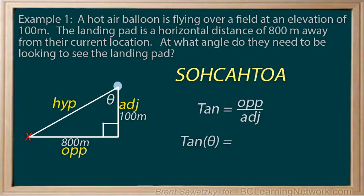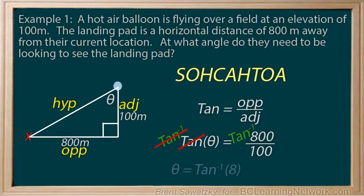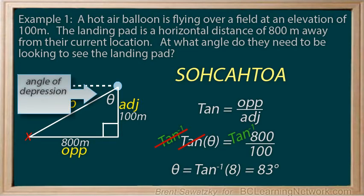Tan of theta equals 800 over 100. To get theta by itself, we need to get rid of the tan on the left, and we can do this by using inverse tan. We inverse tan both sides, and the inverse tan and tan cancel out on the left, leaving theta by itself. On the right, we have the inverse tan of 800 over 100, and we can solve that theta is 83 degrees. So the angle between the vertical and the target area is 83 degrees. Another way to say this is that the angle of depression would be 90 minus 83 degrees, or a total of 7 degrees — so the angle of depression to the target is 7 degrees.